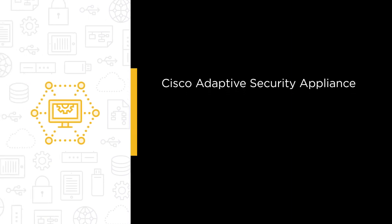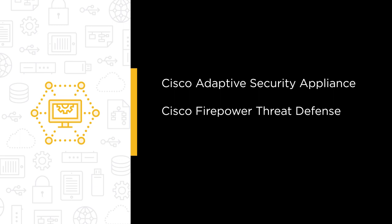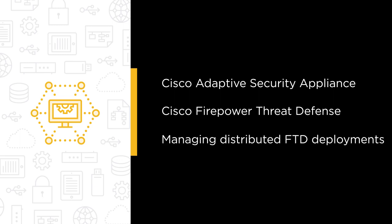Cisco Adaptive Security Appliance, or ASA, policy automation using Ansible. Cisco Firepower Threat Defense, or FTD, policy automation using Python and REST APIs. And managing distributed FTD deployments with Firepower Management Center, or FMC, also using Python and REST APIs.